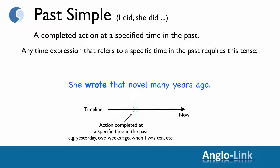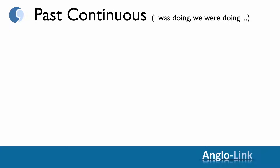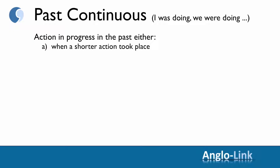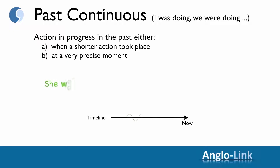Moving on now to past continuous — I was doing, we were doing, etc. As you will remember, this is an action in progress in the past, either when a shorter action took place, or at a very precise moment. For example: she was writing that novel when she became ill.